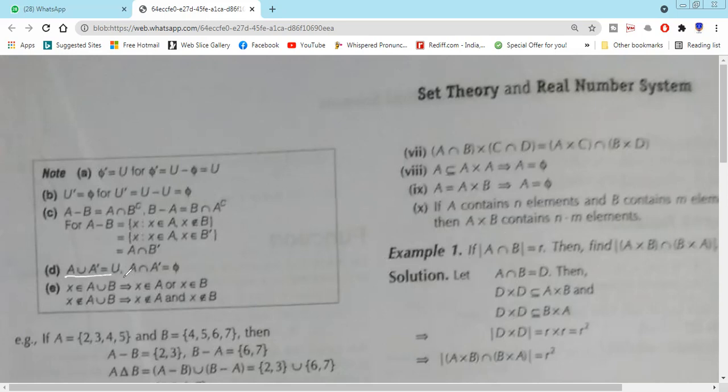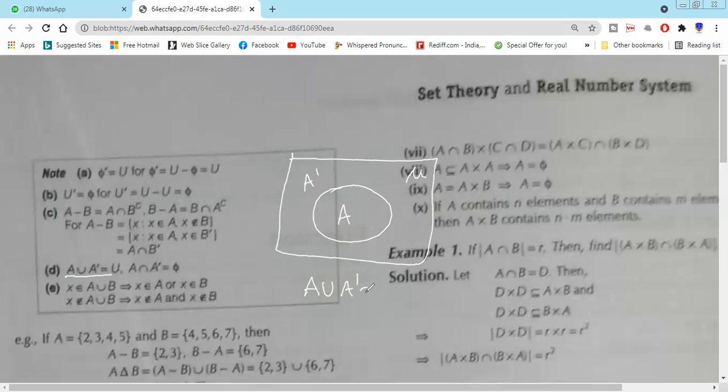A union A' equals μ. That means A is a set, and this is the universal set in which A is a subset. The outer part of A is called A'. If we add both of these values, A and A', we will have the universal set μ. And if we consider A intersection A', which is φ.